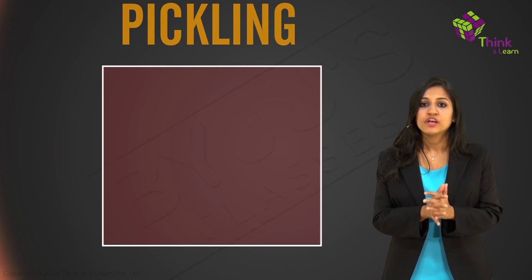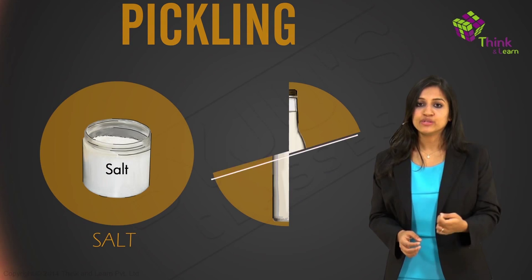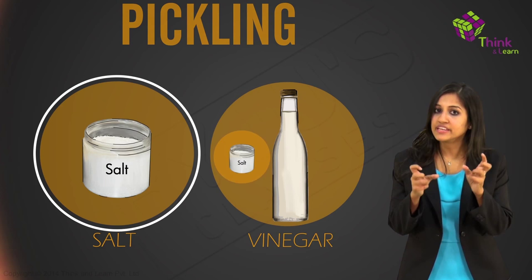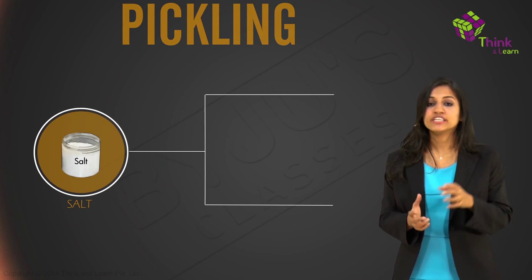So microbes that spoil the food cannot grow in this high acid environment. So you achieve the state in two ways: by means of salt and by using vinegar. And when you use vinegar, you need to use salt as well. So salt is the main ingredient here in pickling. So pickling with salt actually falls into two categories: one is dry salt and one is brined salt.